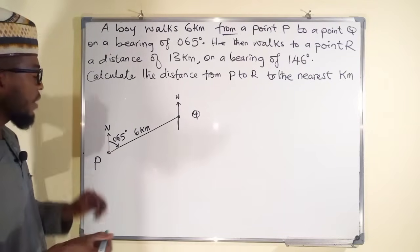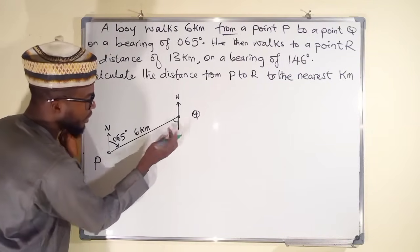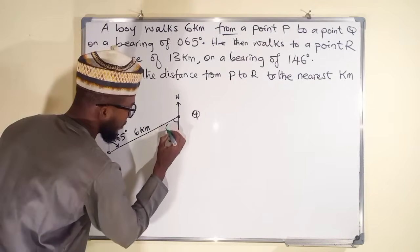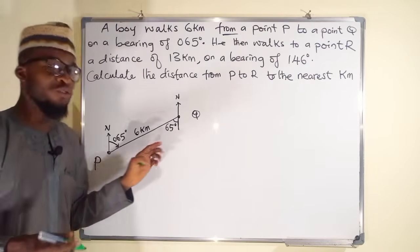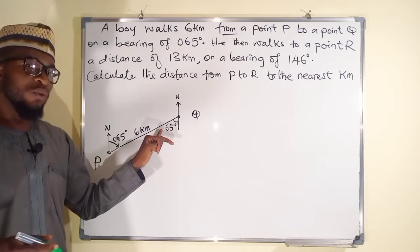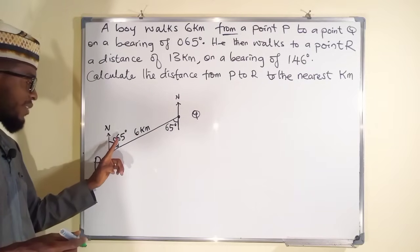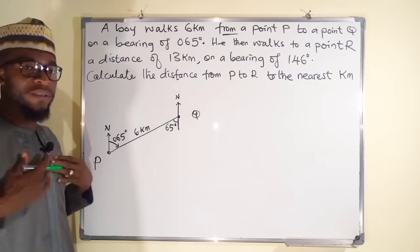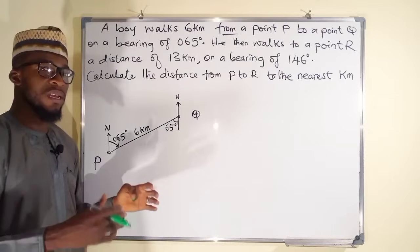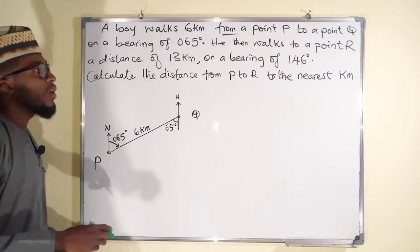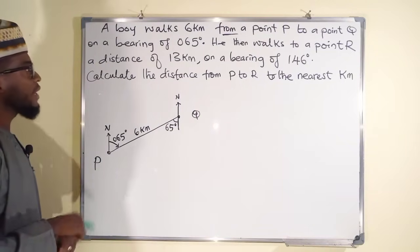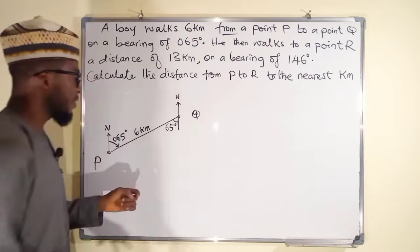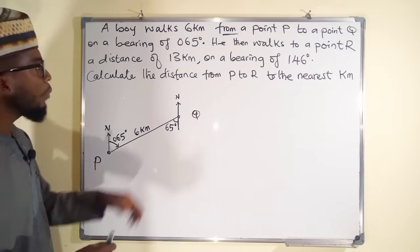We are done with the first sketch. We can include this angle — remember, it is alternate to this — so we can insert it as 65 degrees. Any angle given to you from the question must be written in three digits, but since I introduced 65 degrees personally, it is not necessary here. From Q, the boy keeps going again — the second trip from Q to R is 13 kilometers, even longer than the first trip.